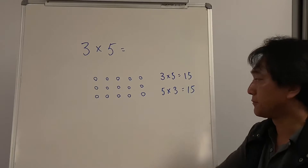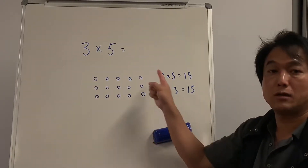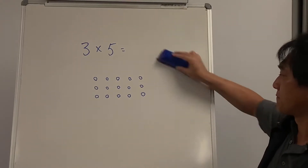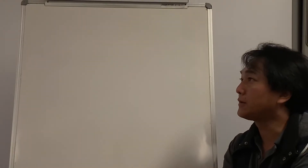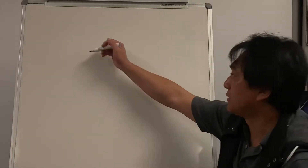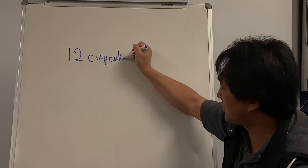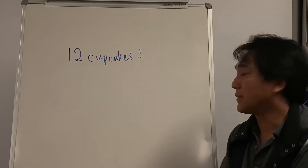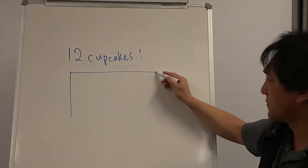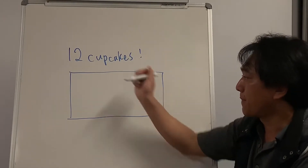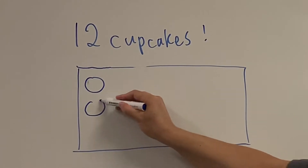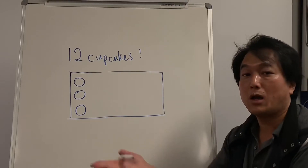There's another question. Knowing that we're going to use this arrangement — the array. So let's say my dad likes baking. He baked 12 cupcakes, and he's going to put these cupcakes on the tray. He's going to place 3 cupcakes in each column. How many columns can you make? Let's pause the video and see if you can draw a picture.